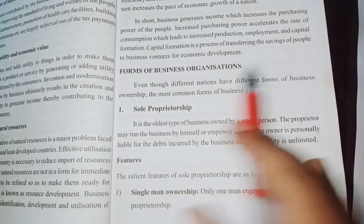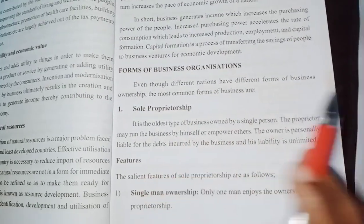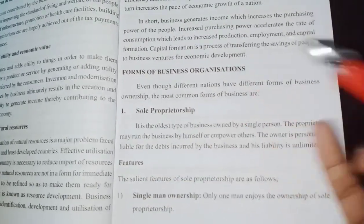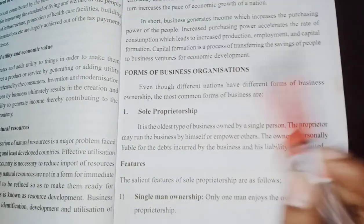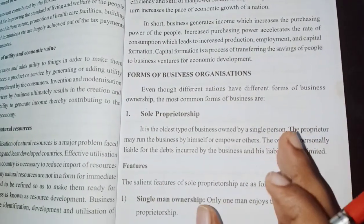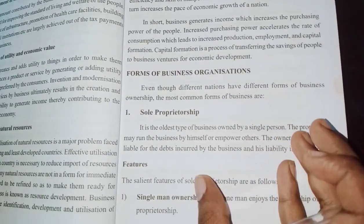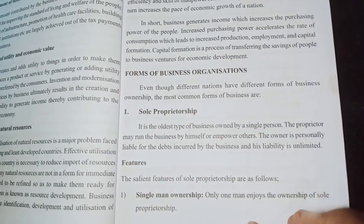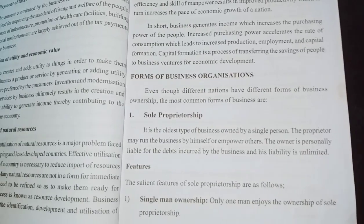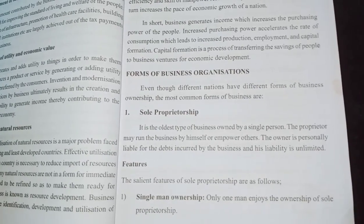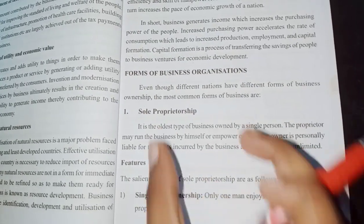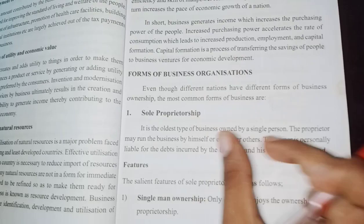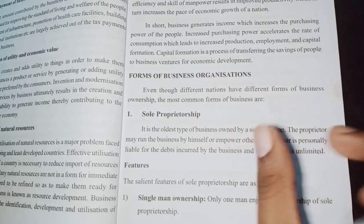The first point is Sole Proprietorship. Sole proprietorship is a single person business. This is a business that only belongs to one person. It is the oldest type of business, and it is owned by a single person.